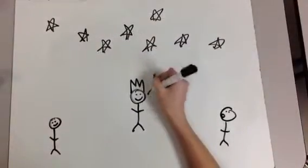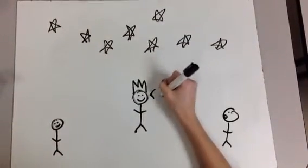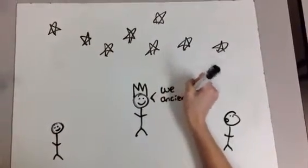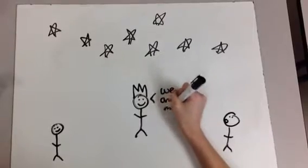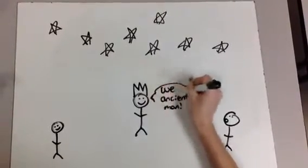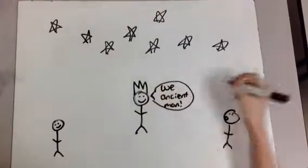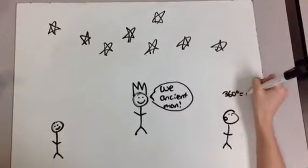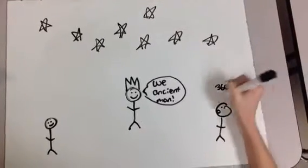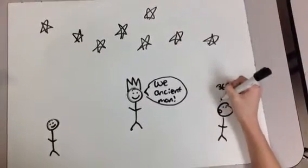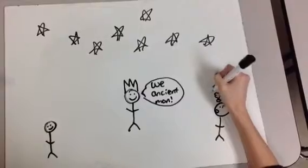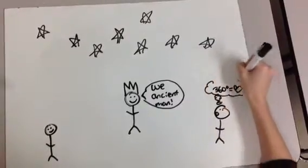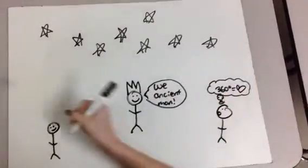We use degrees on account of the ancient Babylonians. They are thought to have chosen 360 degrees as the number of degrees in a circle. They tracked the movement of stars and noticed that stars move from one night to the next one 360th of a circle, and it would take the stars one year to complete a full rotation.